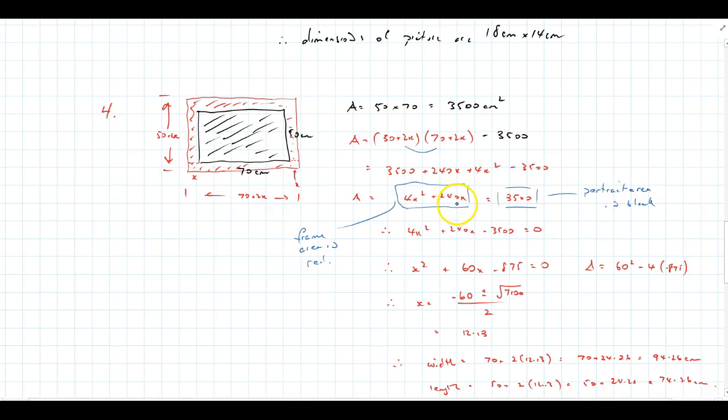Which, as I've written here, is the frame area in red, and now I'm making that equal to 3,500, because we're told that area will be equal to the black area, the portrait area in black. So now I'm solving the equation, 4x squared plus 240x equals 3,500.